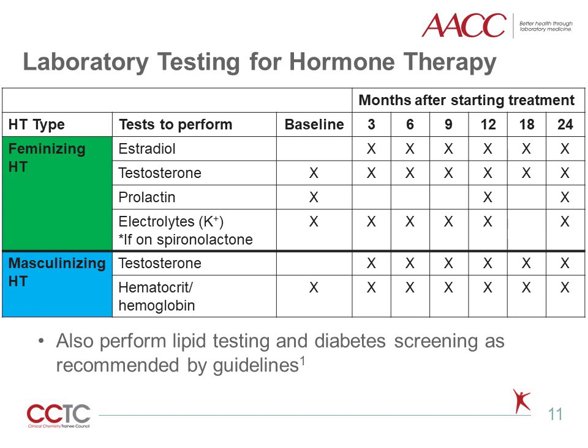If trans women are taking spironolactone as an antiandrogen, it is critical to monitor for hyperkalemia because spironolactone is a potassium-sparing diuretic, in addition to having antiandrogen properties. It is important to note that baseline measurements are recommended for some analytes prior to starting hormone therapy. Endocrine Society guidelines also recommend that all individuals on hormone therapy have regular lipid testing and diabetes screening as suggested in guidelines from the National Cholesterol Education Program, American Heart Association, or American Diabetes Association. Other risk factors, including family history, should be considered when deciding about the frequency of testing.